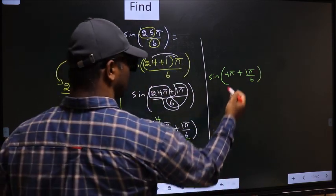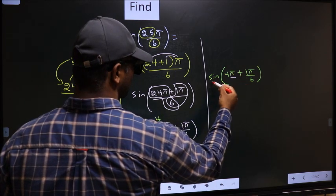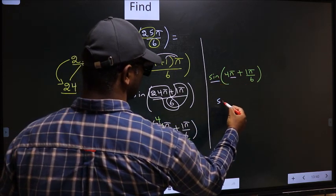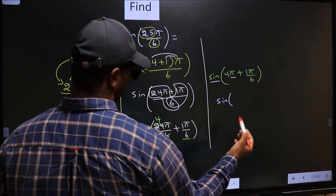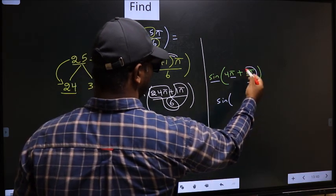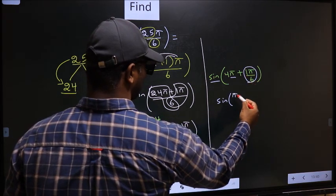Next, here we have π. So sine is not going to change. It will remain sine of this angle we get, π by 6.